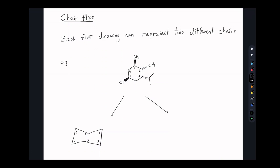Welcome to lecture 5.8. Here we're going to cover the chair flip. As the last section in the isomerism unit, we're going to discuss how the cyclohexane ring and the chair structure actually has two different conformational isomers.